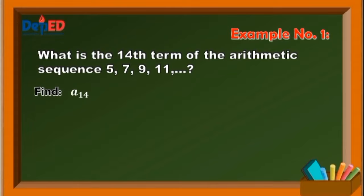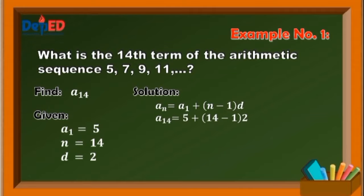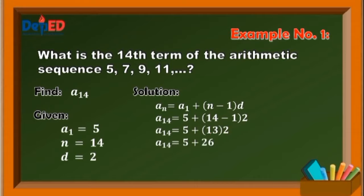You are asked to find a sub 14. From the sequence, you know that a sub 1 is equal to 5. And since we are looking for the 14th term, then n is equal to 14. And obviously, d is equal to 2. Then use the formula: a sub n is equal to a sub 1 plus quantity n minus 1 times d. Substitute the given values: a sub 14 is equal to 5 plus quantity 14 minus 1 times 2. Simplify using PEMDAS rule — simplify first what is inside the parenthesis. So a sub 14 equals 5 plus 13 times 2. Then multiply 13 and 2 before adding to 5. So a sub 14 is equal to 5 plus 26, which is equal to 31. Therefore, the 14th term is 31.